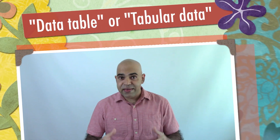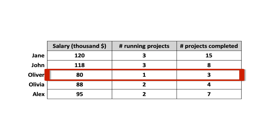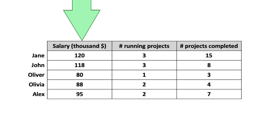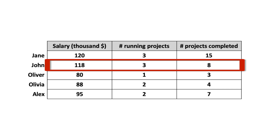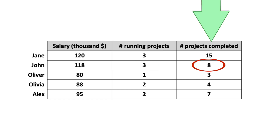Now let us talk about a data table. A data table is a data format where each row represents a unit of the data and each column characterizes the unit of data. You are familiar with spreadsheets like Excel — there are tables in Excel files. Suppose you have a table of employees. A convention is to keep each employee's information in a row. Each column explains an employee. For example, the data piece John is a combination of his salary, number of running projects, and number of completed projects.